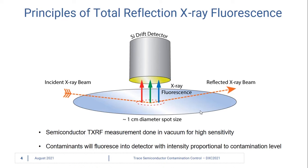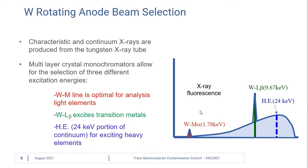This gives us the highest sensitivity and the lowest limits of detection that the semiconductor industry demands. In order to get good sensitivity for elements all across the periodic table, we use three different lines of incident x-ray for our TXRF analysis.